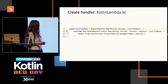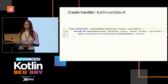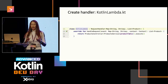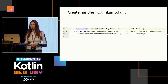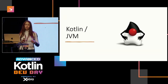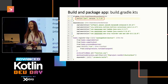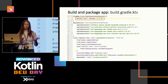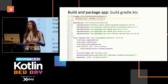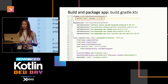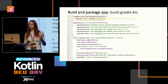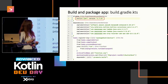After that we need to package and deploy our application. For Kotlin on JVM, in Gradle we specify the latest version of Kotlin on JVM, include the AWS SDK libraries, and package everything into a zip file.